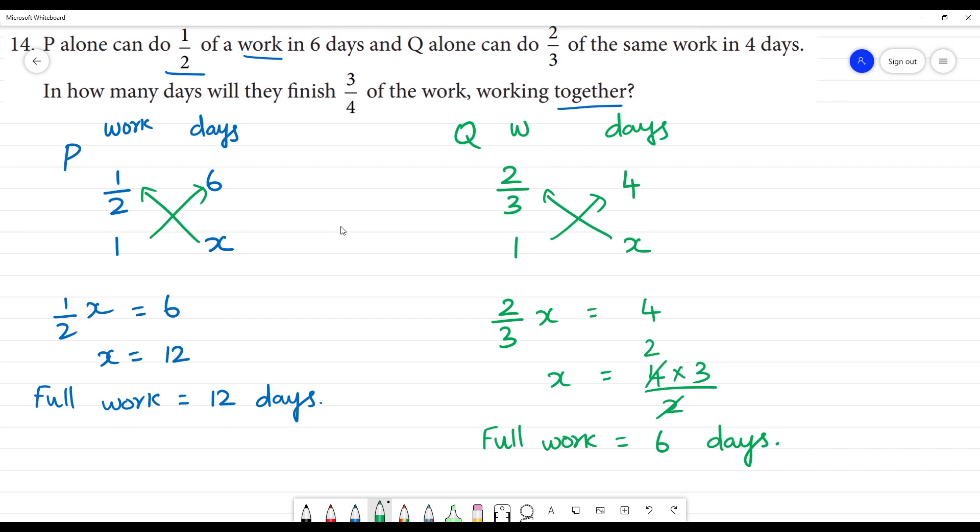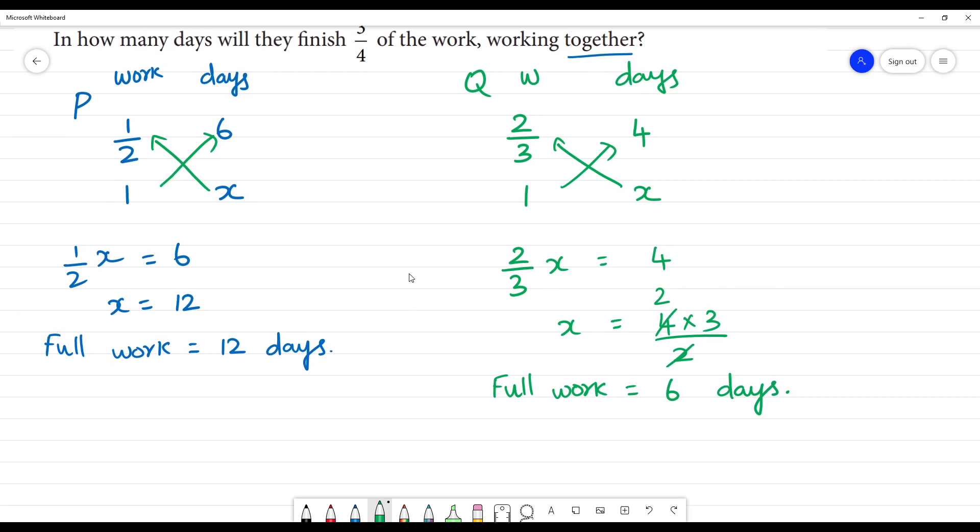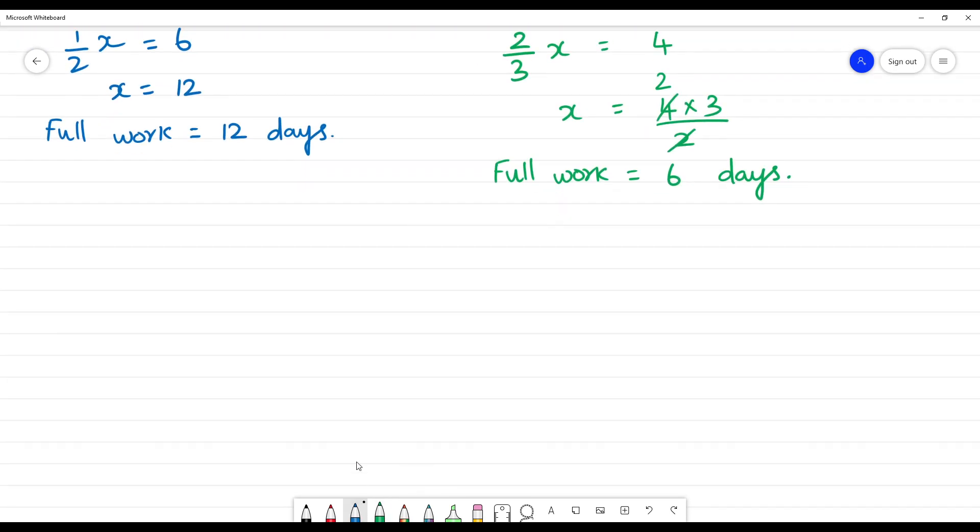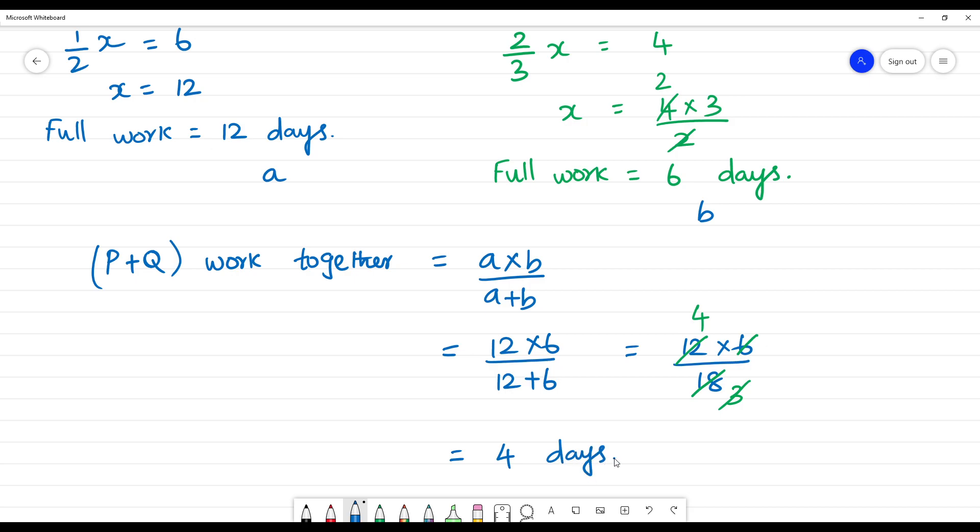If they are working together, P plus Q work together. This is A multiplied by B by A plus B. So A multiplied B, 12 into 6 by 12 plus 6, that is equal to 12 into 6 by 18. 6 times 2 is 12, 12 by 18 is 4. P and Q same work 4 days.